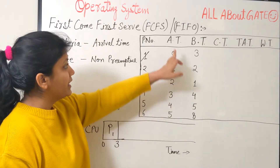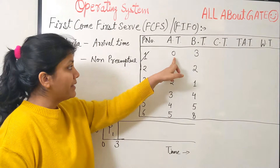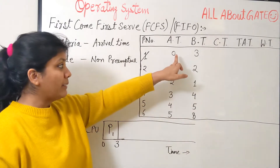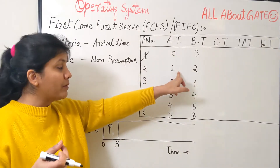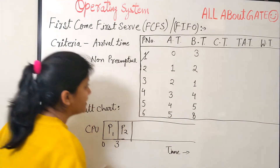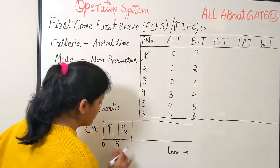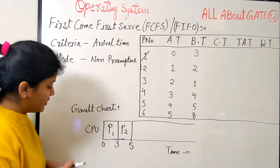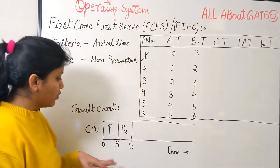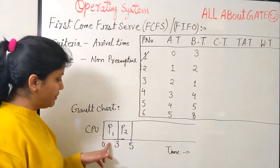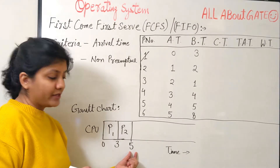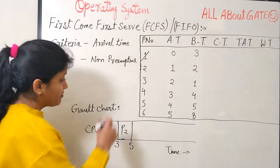By the time P1 finishes, we look at the next minimum arrival time after zero, which is one. At time one, P2 arrives. So we allocate the CPU to P2. P1 ran from 0 to 3, and P2 needs a burst of 2, so it runs from 3 to 5. The time is now 5 and P2 is finished.